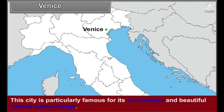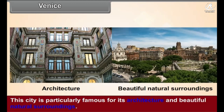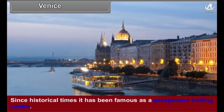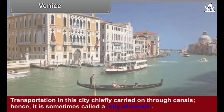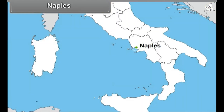Venice: Venice is particularly famous for its architecture and beautiful natural surroundings. Since historical times, it has been famous as a prosperous trading center. Transportation in this city is chiefly carried on through canals; hence it is sometimes called the city of canals.